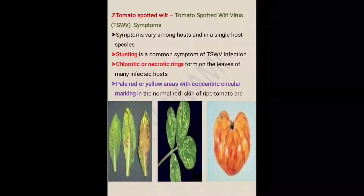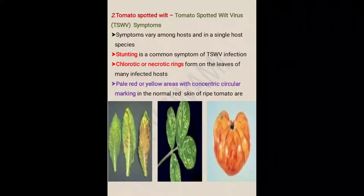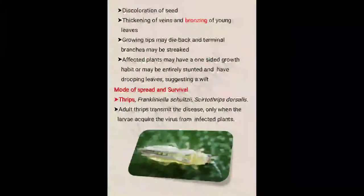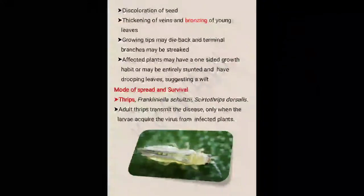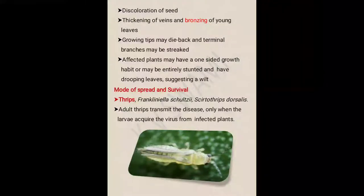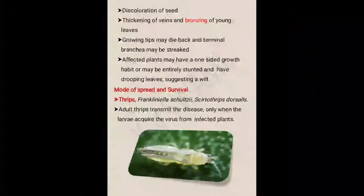Necrosis means death — necrotic tissue means death of that tissue. Pale red or yellow areas with concentric circular markings appear in the normal red skin of ripe tomato. Discoloration of seed — loss of original seed color — occurs due to virus infection. Thickening of veins and browning of young leaves is observed. Growing tips may die back and terminal branches may be affected. Affected plants may have one-sided growth, may be entirely stunted, and have drooping leaves, suggesting a wilt.